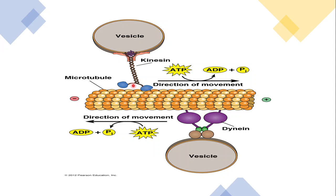These are the heads — as we say, these are the legs of the kinesins and these are the legs of the dyneins. They utilize ATP for their movement. They use the phosphate group of the ATP as they move in the forward direction.